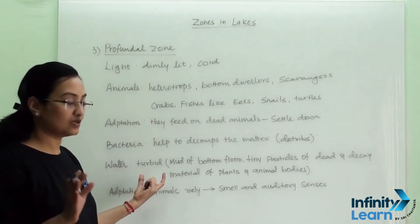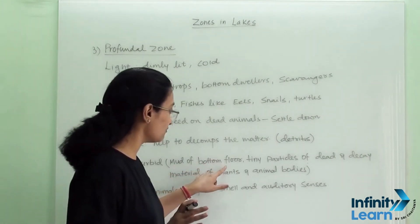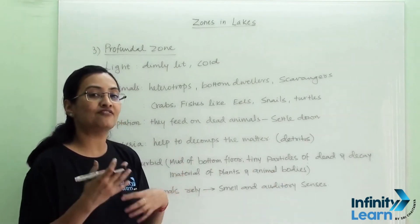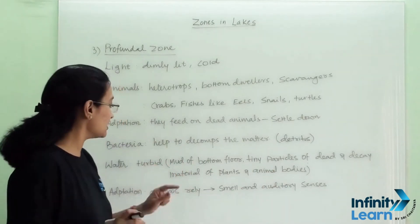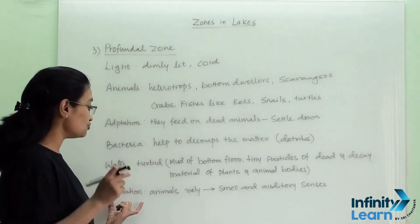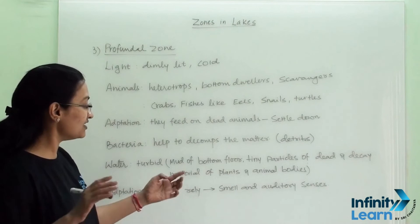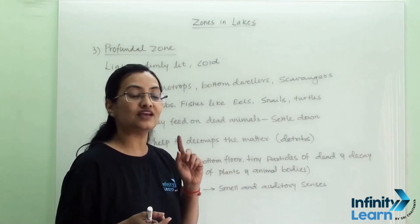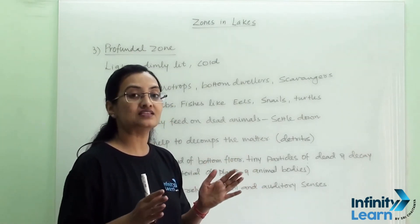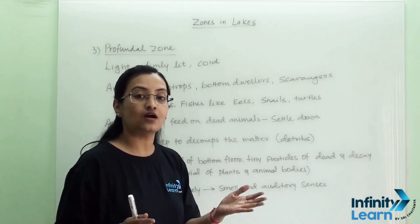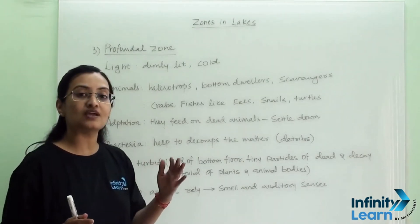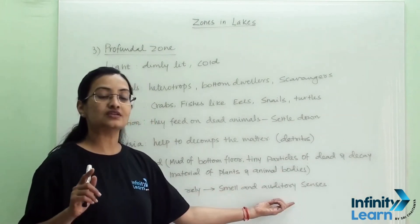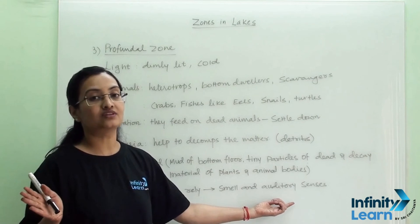The water here is very turbid because mud from the bottom floor and tiny particles of dead and decaying organic material from plant and animal bodies all mix together. The adaptation to this situation is that animals rely on smell and auditory senses — they smell where food is or hear whether any prey is nearby — rather than relying on vision, because the turbid water makes it impossible to see clearly.